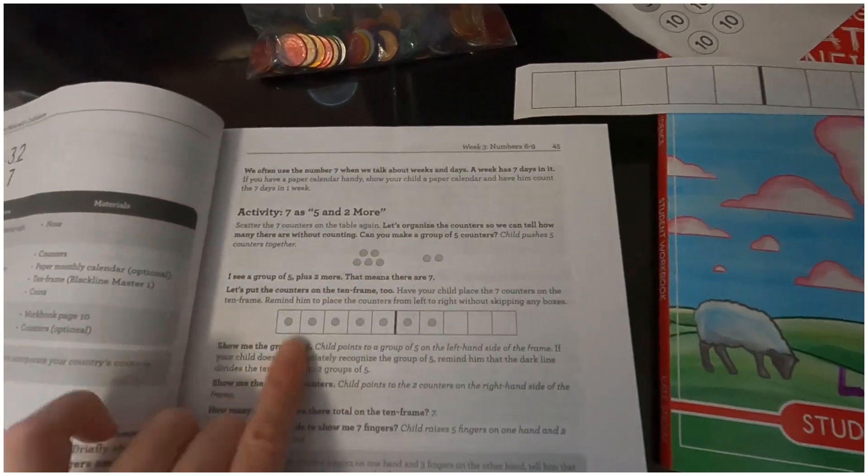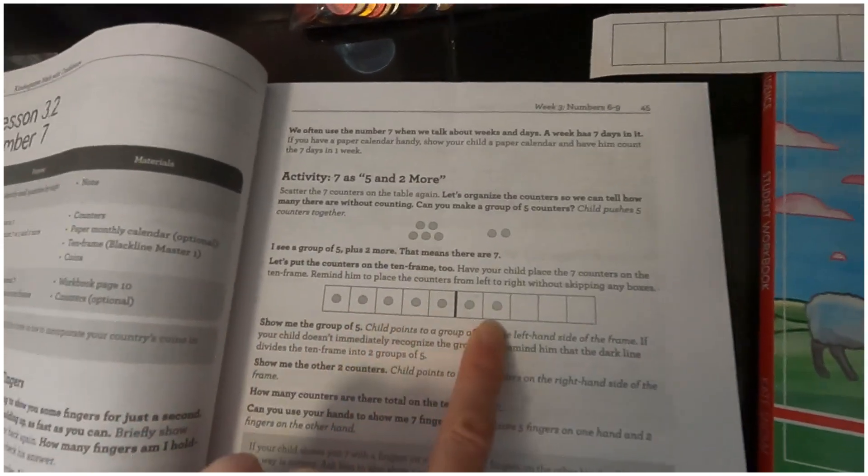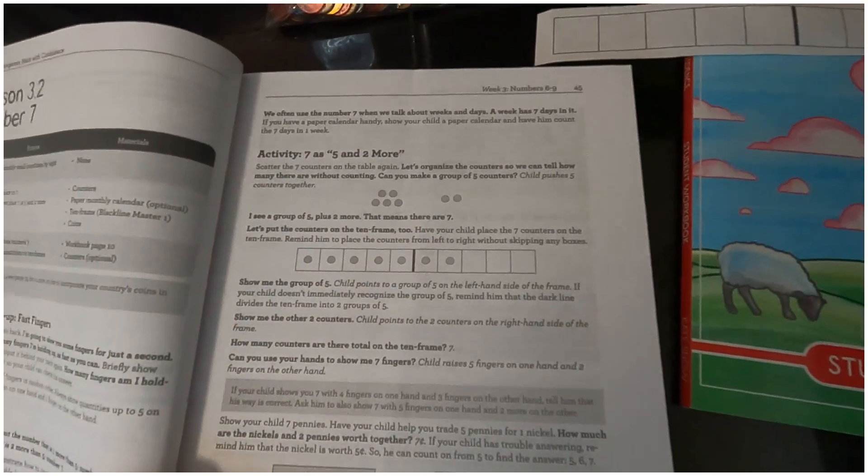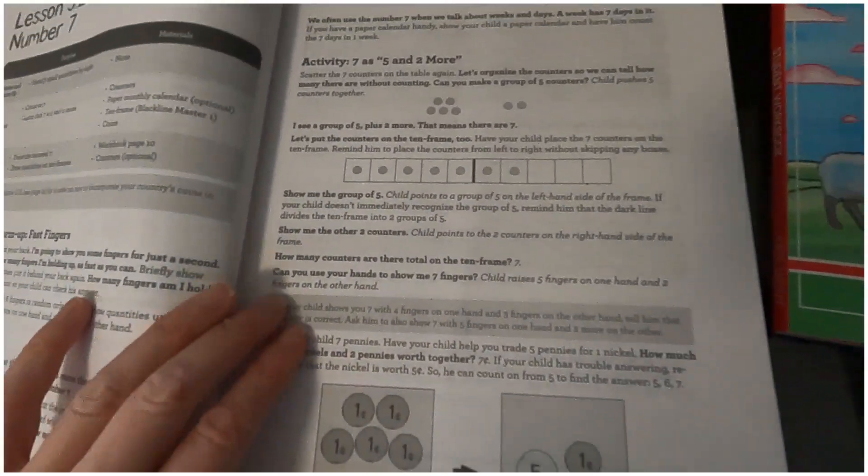After that, you're going to pull out seven counters out of this bag and then again we're going to arrange them in the five and the two. 'I see a group of five plus two, that means there are seven. Let's put the counters in the ten frame too.'